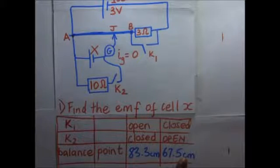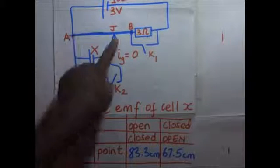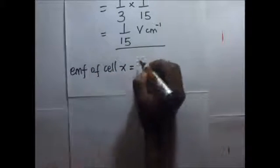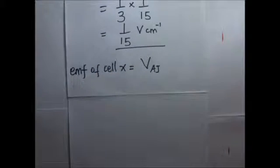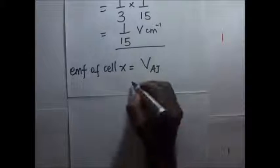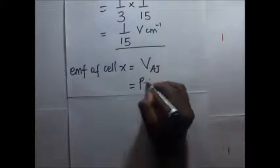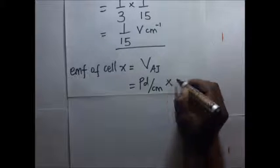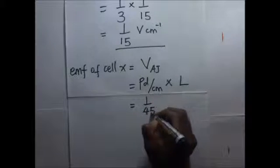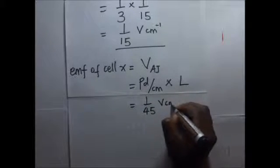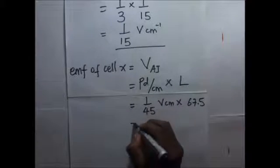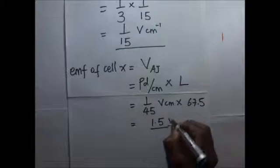So to get the EMF, it is going to be the PD across AJ. EMF of cell X equals the PD per centimeter multiplied by the balance length. Our PD per centimeter is 1/45 volts per centimeter, multiplied by the balance length of 67.5 centimeters. Therefore our EMF for that cell is going to be 1.5 volts.